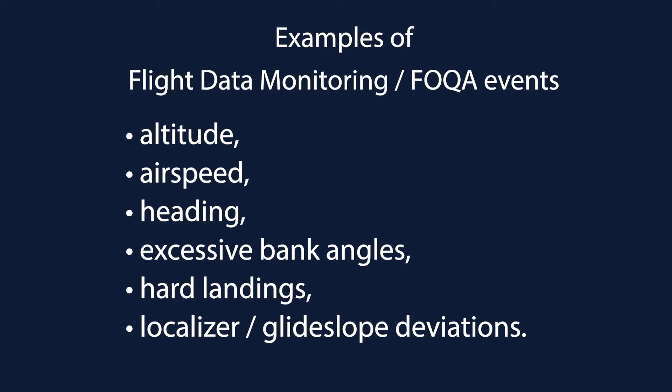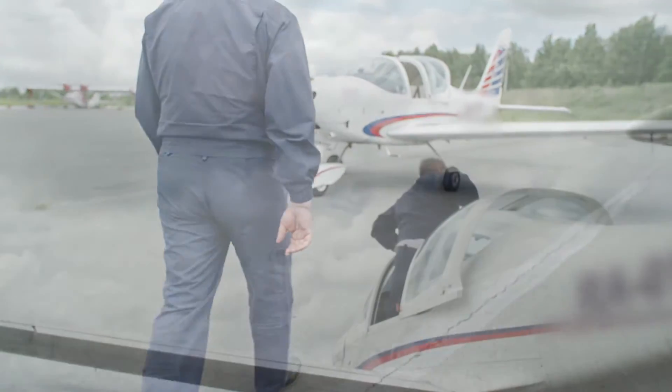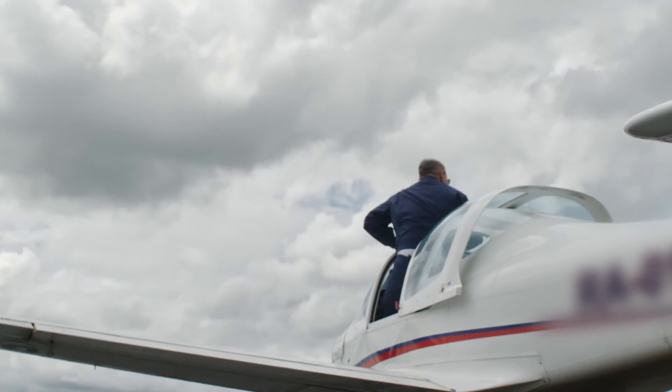Some examples of events are altitude, airspeed, heading, excessive bank angle, hard landings, and localizer or glide slope deviations. A FOQA system is usually configured with applicable events for a given operator's aircraft type and their type of operation. Events are certainly not written in stone and can — or at least should — be easily modified as required for the size and complexity of your organization.